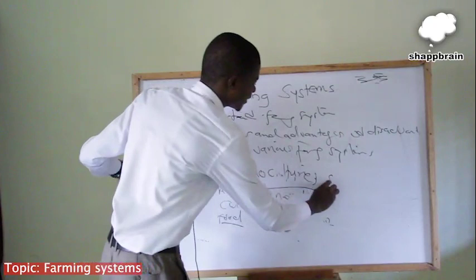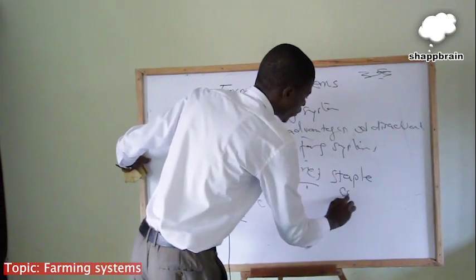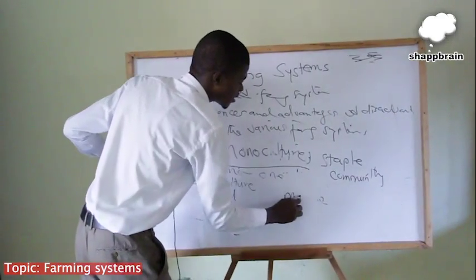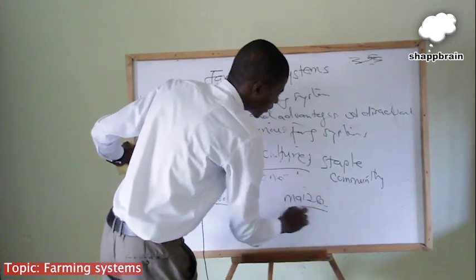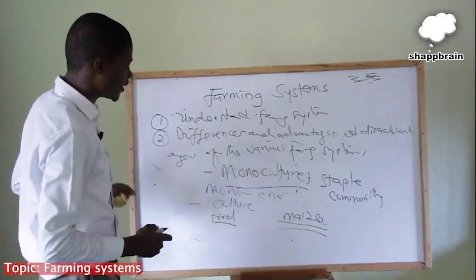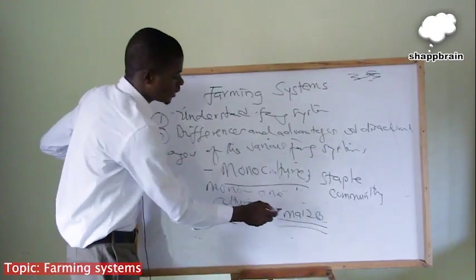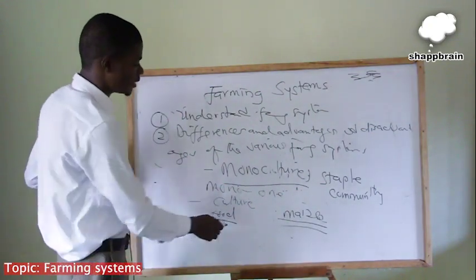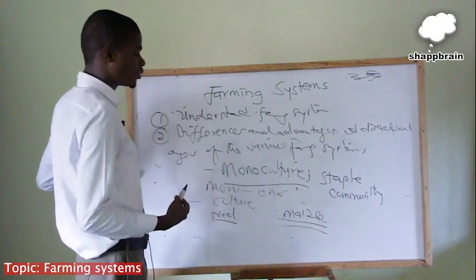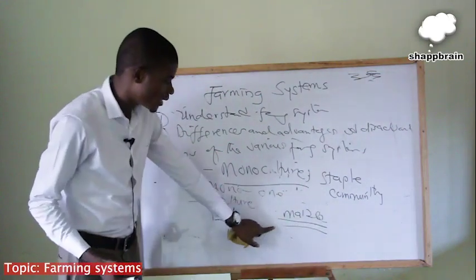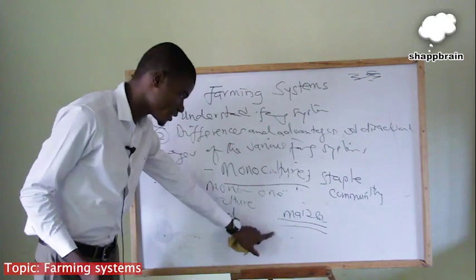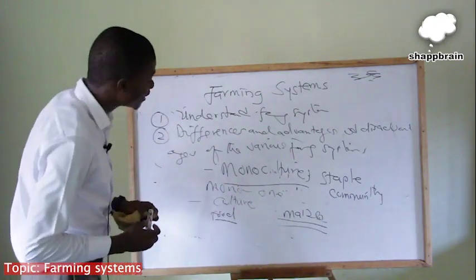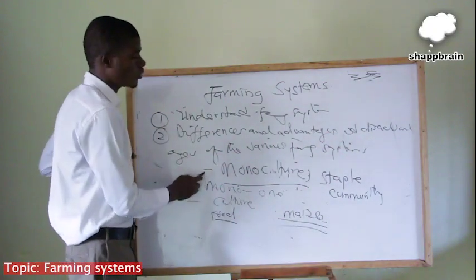Mostly it is the staple food of the community where the farmer lives. For instance, maize is a staple food crop in the northern region. So there are some farmers who farm maize every year. If you see that the farmer is farming maize this year, you expect to come to the farm next year and still see the farmer cultivating maize. When that happens, we say the farmer is practicing monoculture.